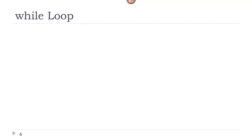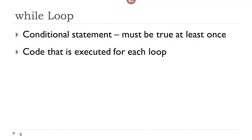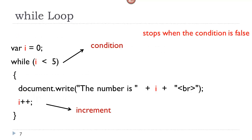We also have what is called a while loop. A while loop gives us some kind of a conditional statement that must be true at least once. Code will be executed for each loop as long as that conditional statement is still true. The increment is literally at the bottom. Just a word of caution — if the condition statement is always true, then you will never exit the loop, so just watch out for that. Years ago it could have crashed your computer. The while loop evaluates the condition and it continues to loop as long as the condition is true. It will stop when the condition is false.